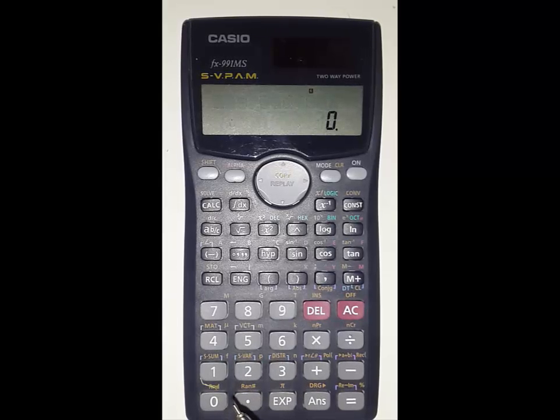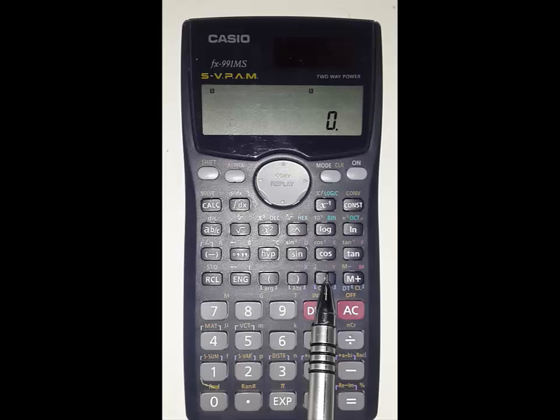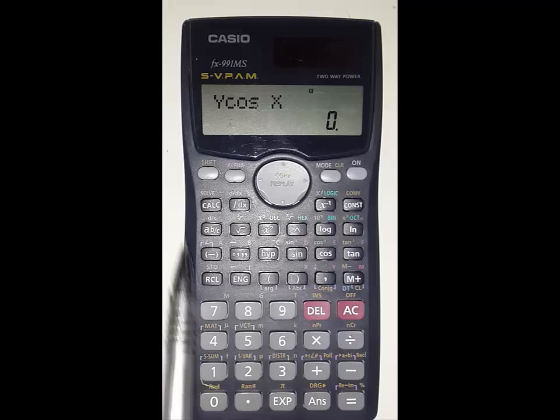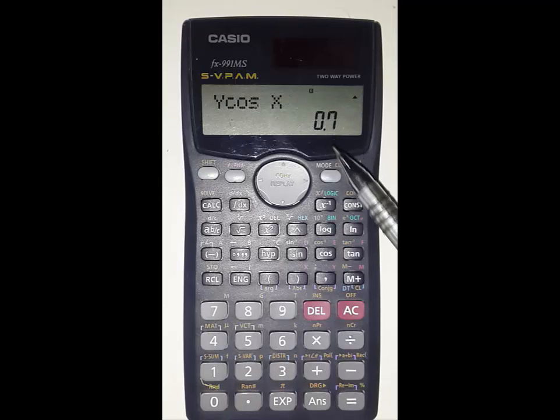Now the formula here is Y cos x. So alpha Y, cos button, then alpha. Press this button. You get Y cos x. Use this calc so that it is asking for Y value. If your Y value is 1.4, just give 1.4 and press equal to button. It's asking for X value and we know very well X value is in radian and it is pi by 3. So shift pi divided by 3 equals 0.6, which is our answer.